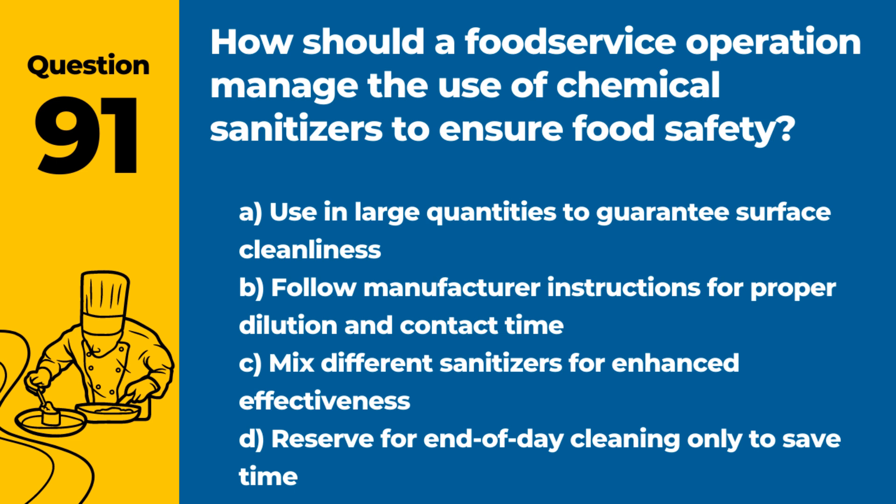Question 91. How should a food service operation manage the use of chemical sanitizers to ensure food safety? Answer: B. Follow manufacturer instructions for proper dilution and contact time. Correct use of sanitizers ensures they are effective without posing a risk to food or customers.